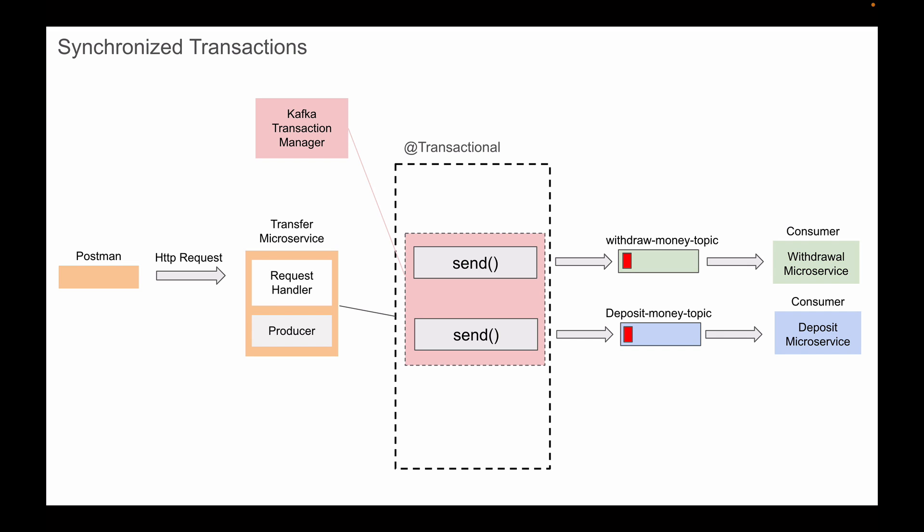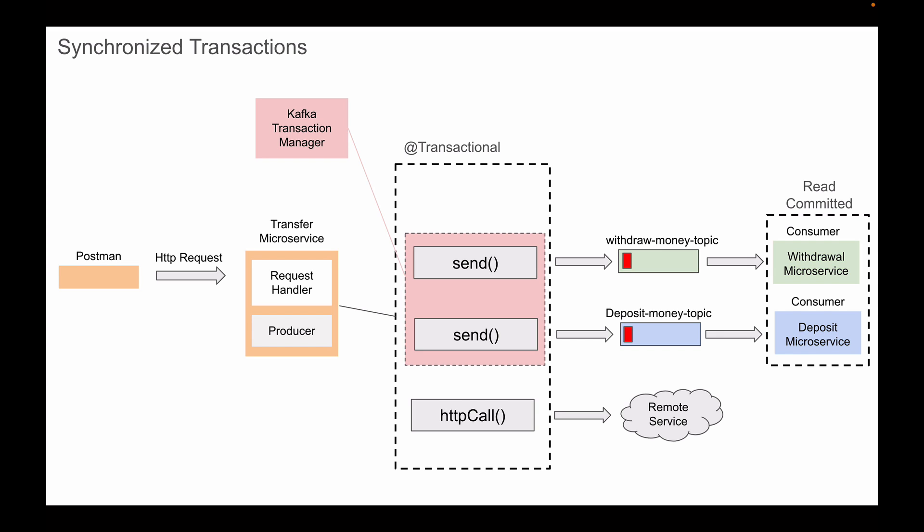If the transaction fails, then Kafka messages that are sent within this transaction will not be committed. And to make sure that consumer microservices do not read messages that were not successfully committed, these two consumer microservices are configured to read committed messages only. This same method will also send an HTTP call to another microservice.